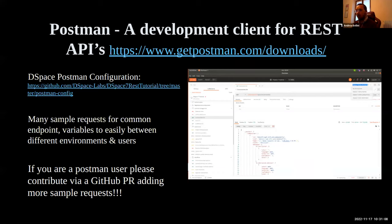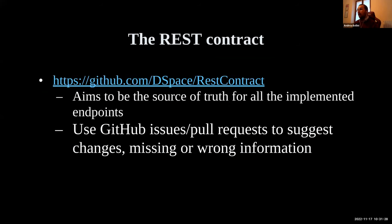If you are a Postman user, please contribute back to the GitHub repository — we want to enhance this collection. If you have examples of other endpoints or find something that is wrong due to a change in the contract, please open issues or pull requests. We also have a markdown repository where all our REST contract documentation is available. In this case too, please open issues or pull requests if you find anything missing or wrong — it's very important that we keep this repository updated.